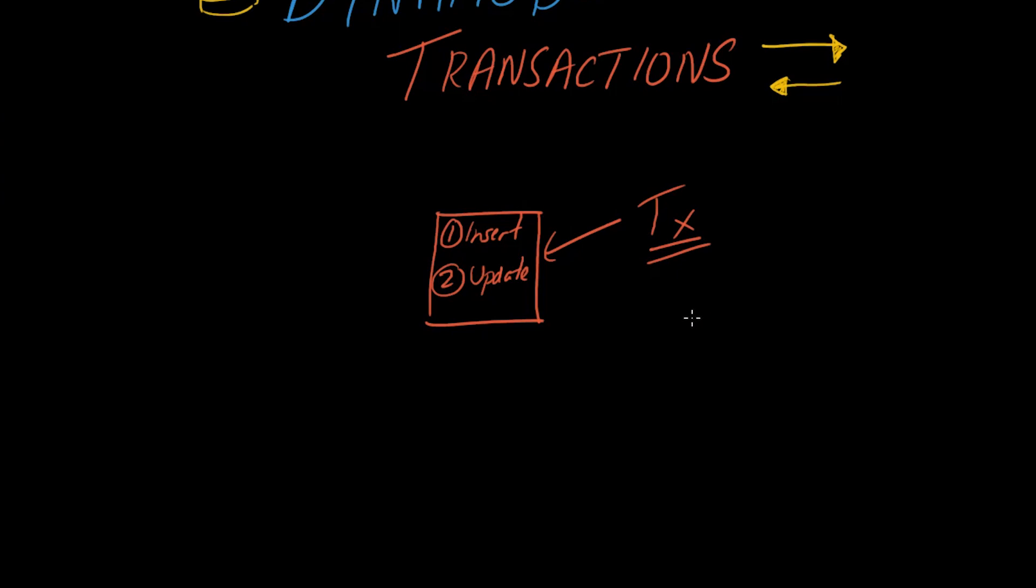What makes this thing a transaction is the fact that this unit, or these two things within this unit, either all succeed or all fail. That means in order for this thing to be considered a transaction, you cannot have a scenario where your insert step succeeds and your update fails.